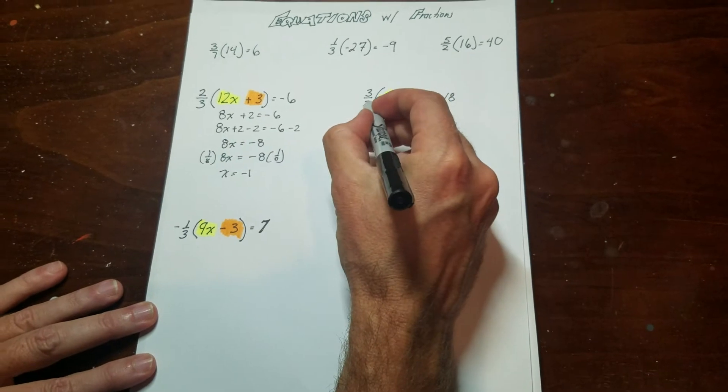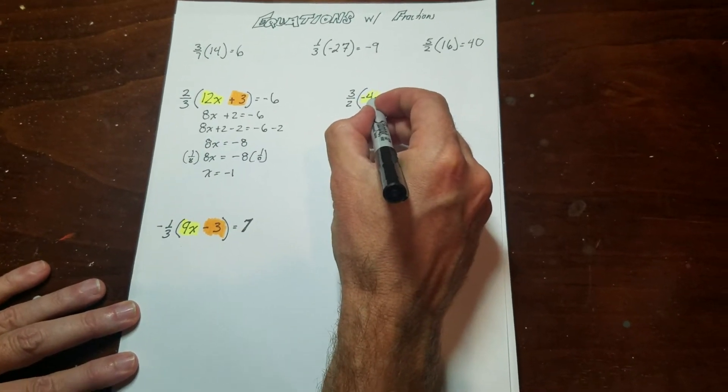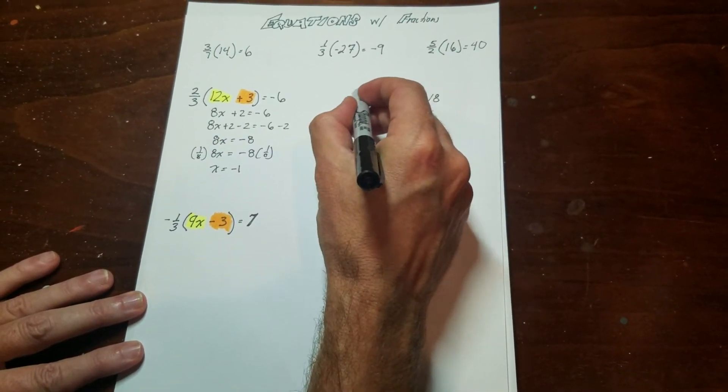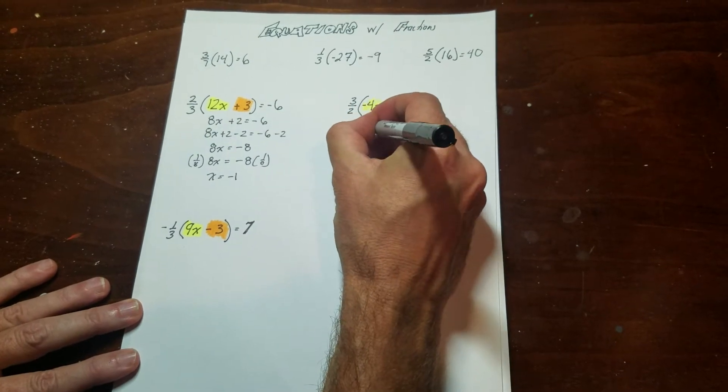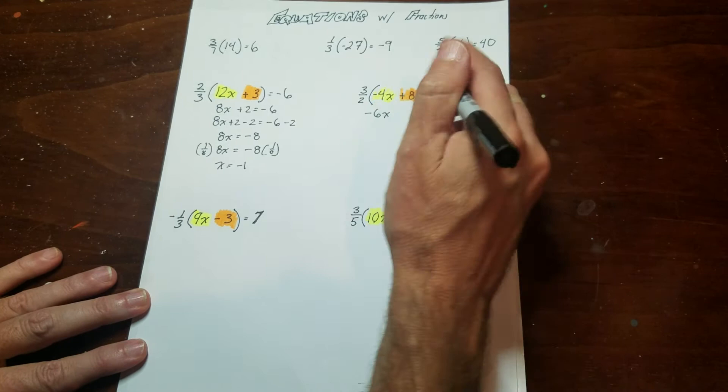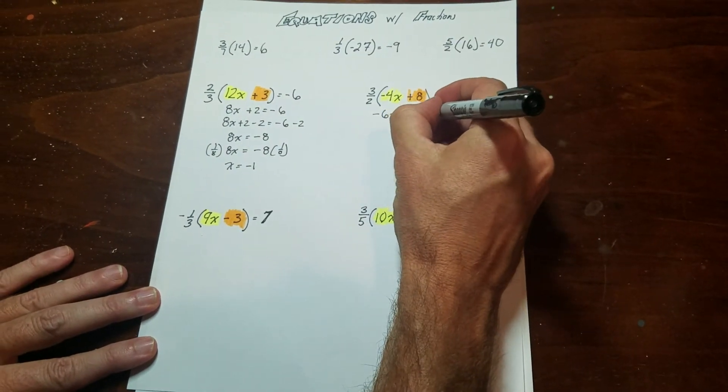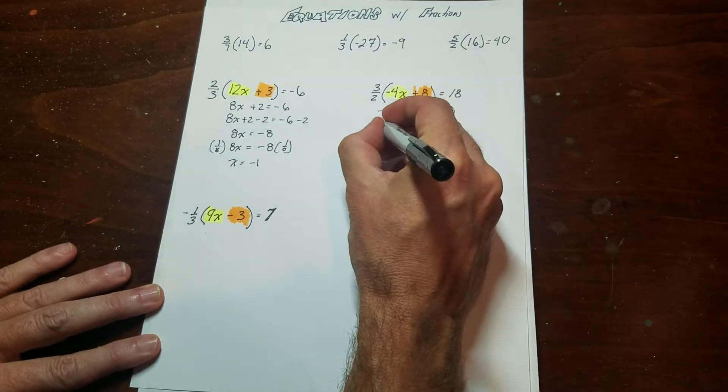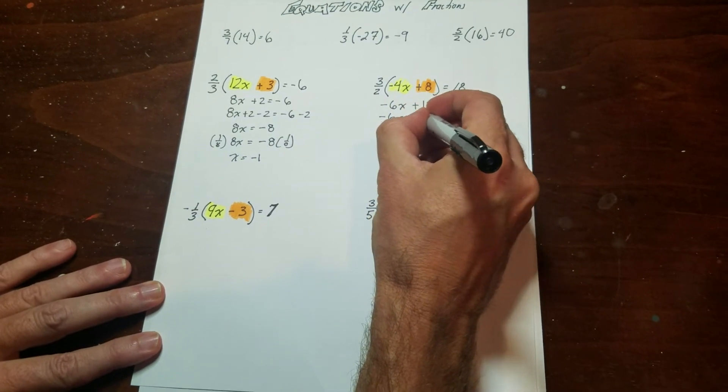So on this one here, I'm going to do 2 into 4, which is negative 2. And negative 2 times 3 is negative 6x. And then 2 goes into 8. 4 times, 4 times 3 is 12. And then from there, you pretty much do your usual stuff.